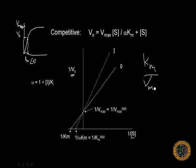Y is equal to 1 over V0. And I spoke already of Km over Vmax as a slope. 1 over substrate concentration is our X plus B, and B is 1 over Vmax.